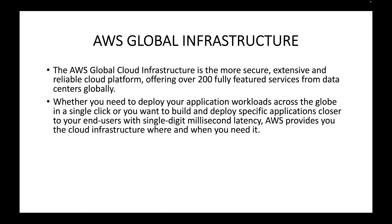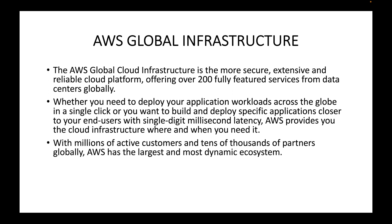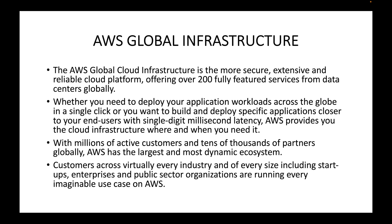Because AWS is available all over the world, you can choose which location to use to deploy your application so that it is closer to your end users. With millions of active customers and tens of thousands of partners globally, AWS has the largest and most dynamic ecosystem. Customers across virtually every industry and of every size — including startups, enterprises, and public sector organizations — are running every imaginable use case on the AWS platform. This global infrastructure gives customers the flexibility and freedom to choose which region to deploy their applications, where their target users are, with low latency.